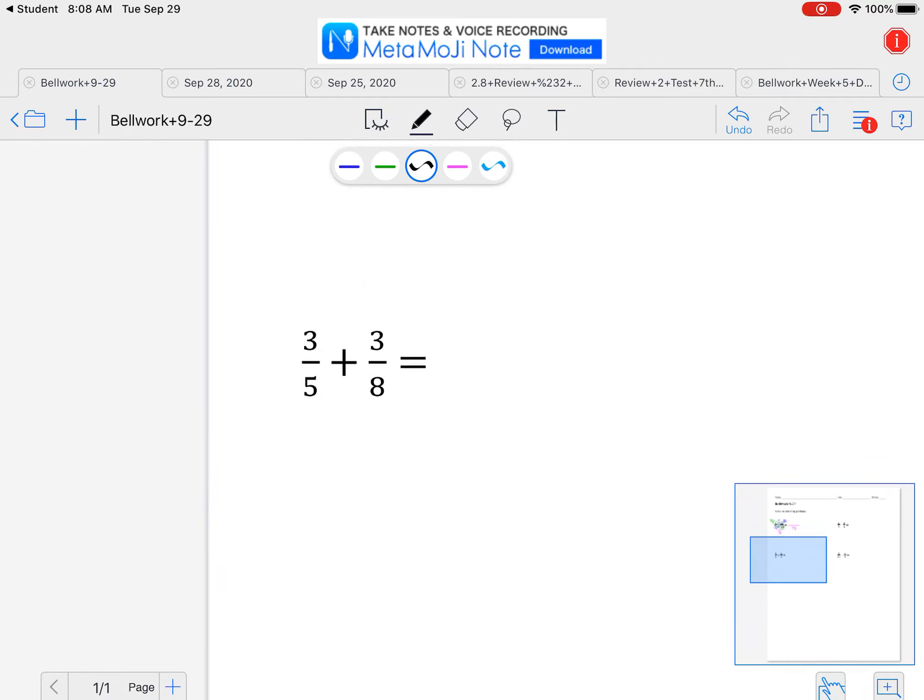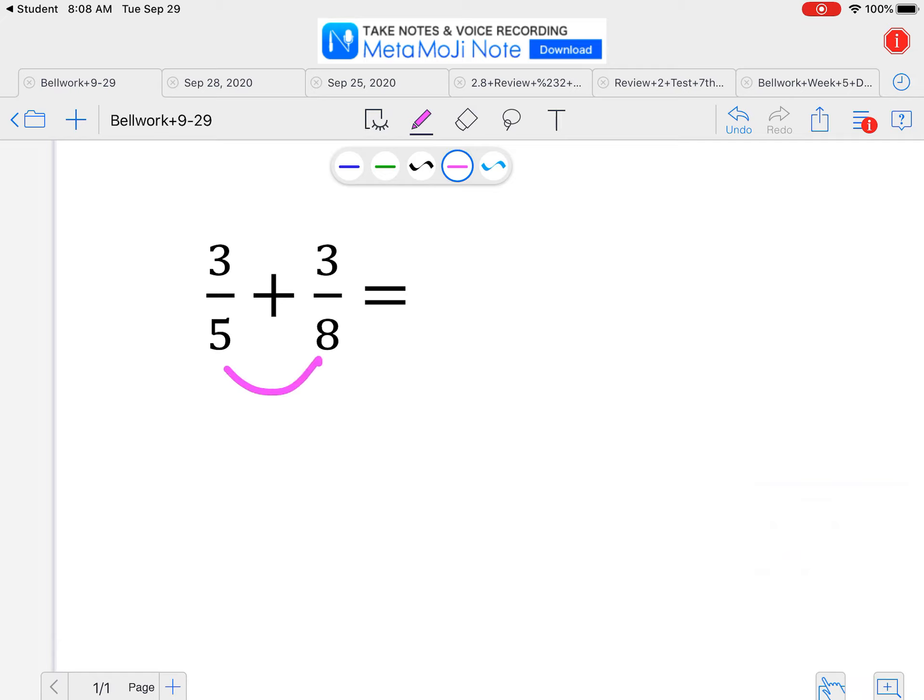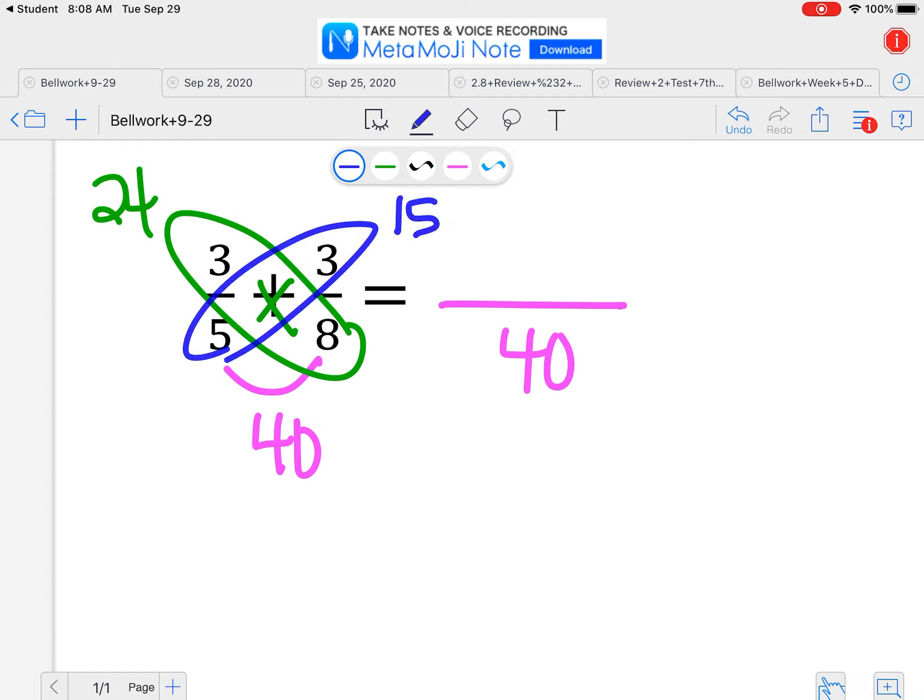The one underneath it is another adding question, so again we have to check our denominators. If they're not the same, we want to multiply and get the same bottom. Then to get new numerators, you can multiply diagonally. 24 because 8 times 3, or 15 because of 5 times 3. Then I'm going to add those together, which would be 39.